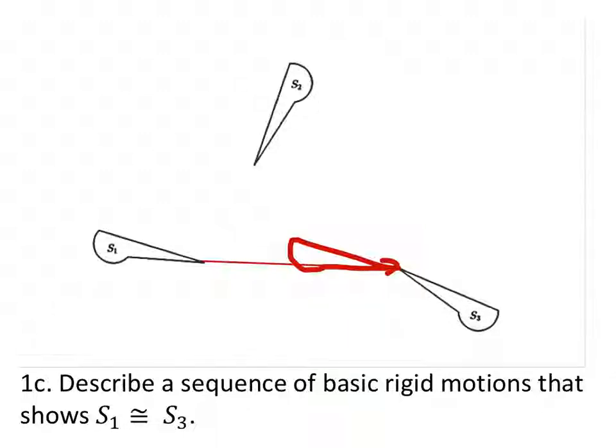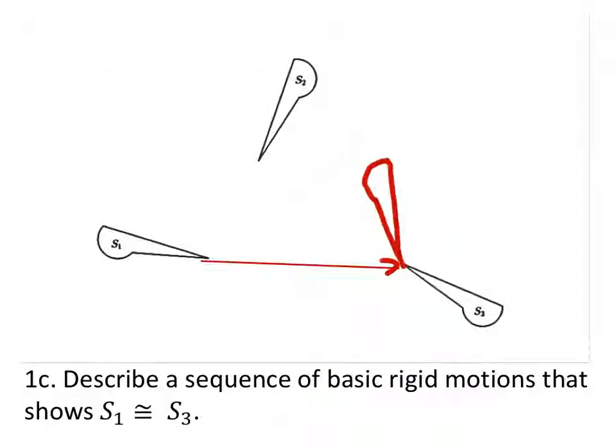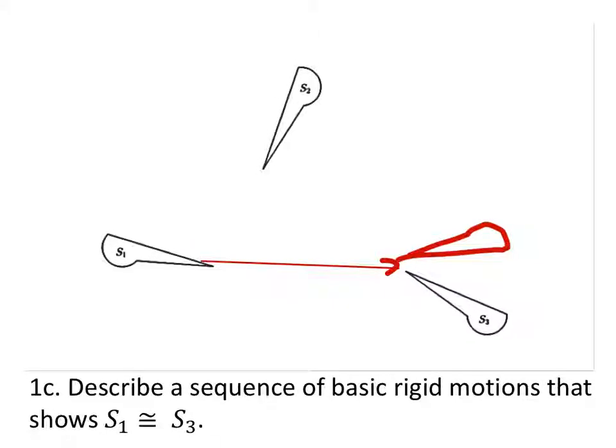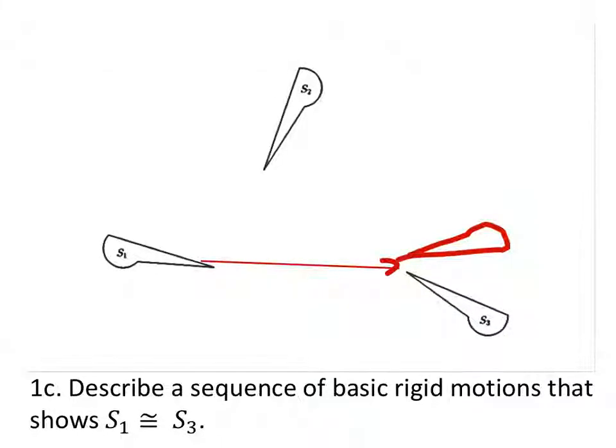Then I'll rotate this thing. All right, so now I have that point and the lines that correspond, all I need to do is reflect this thing, and there we go. We see that shape one now is congruent to shape three because all we did was use rigid motions to transform it onto the other shape.